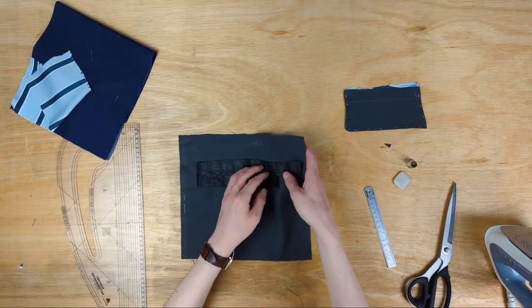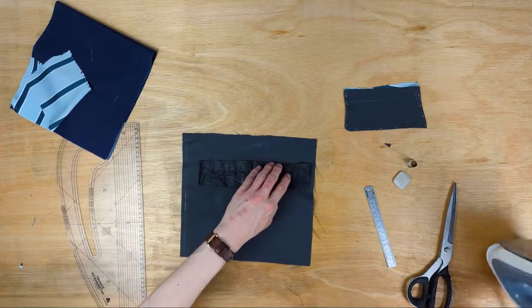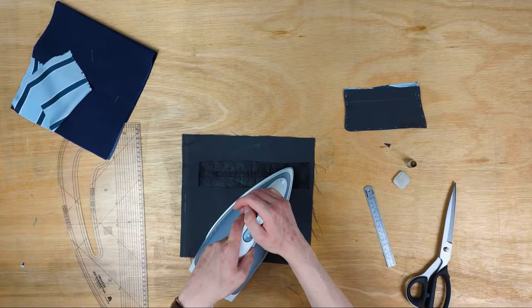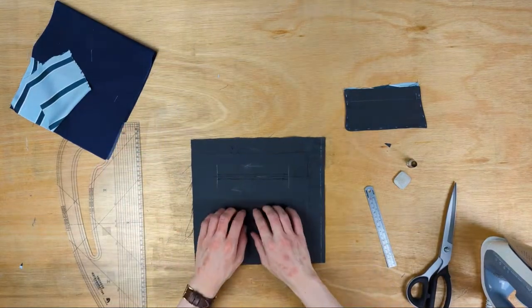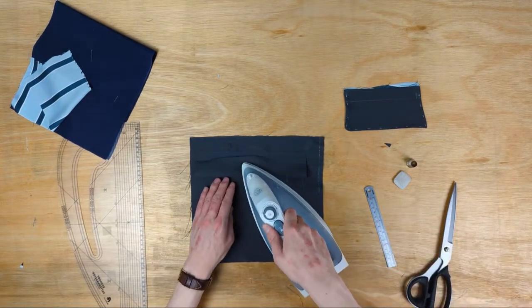If you happen to have a block of wood you could use it as a post iron press. It'll absorb any moisture not evaporated and cool the fabric setting it more fully and quickly.